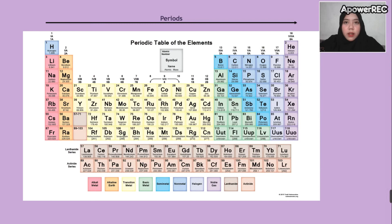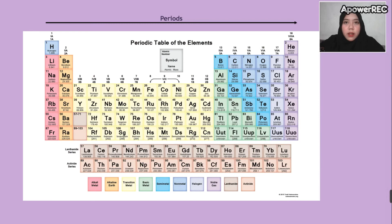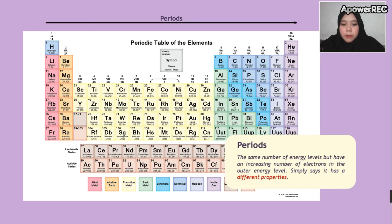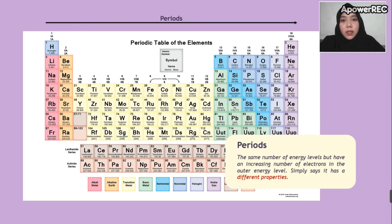The second reason for the arrangement of elements is the periods. The horizontal rows, from left to right, share the same number of energy levels but have an increasing number of electrons in their outer energy levels — meaning elements in a period have different properties. Let's take a look at an example.